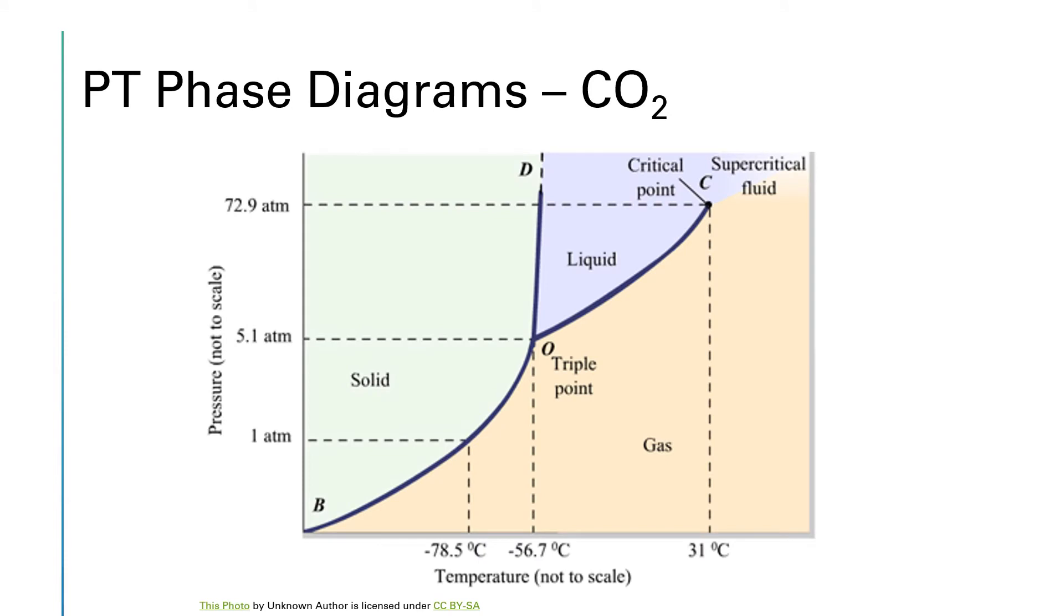This phase diagram is for carbon dioxide, CO2. The vertical axis is showing us pressure. That's where the P in PT phase diagrams comes from. The horizontal axis is temperature. That's the T in PT phase diagrams.